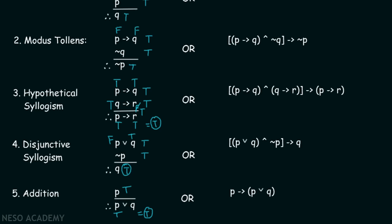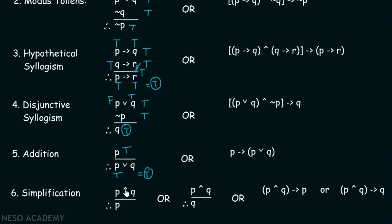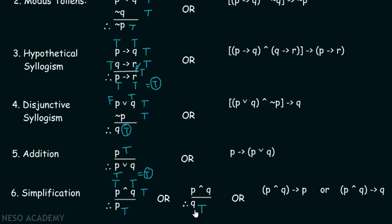The sixth rule is the simplification rule: p and q, therefore p; or p and q, therefore q. We can write these as: p and q implies p, or p and q implies q. These arguments are valid because p and q is true only when both p is true and q is true. Therefore, both p and q individually are true, and hence both conclusions are correct.